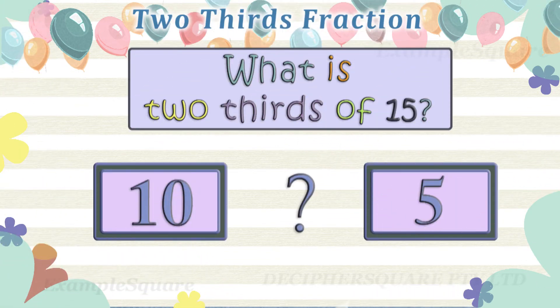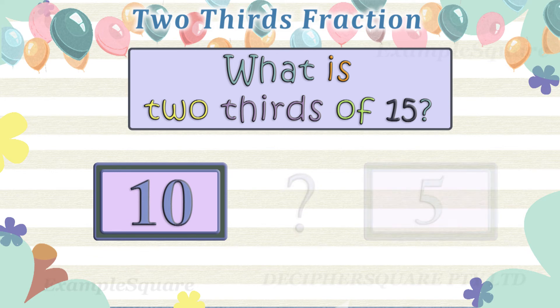What is two-thirds of fifteen? Two-thirds of fifteen is ten.